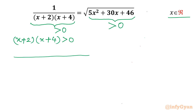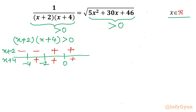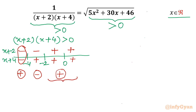I will draw a number line with points minus 2 and minus 4. For x+2: positive when x > −2, negative before that. For x+4: positive when x > −4, negative before that. Checking the sign of the product: it is positive for x > −2 and positive for x < −4. So the product is negative between −4 and −2, meaning we cannot expect our solution there.